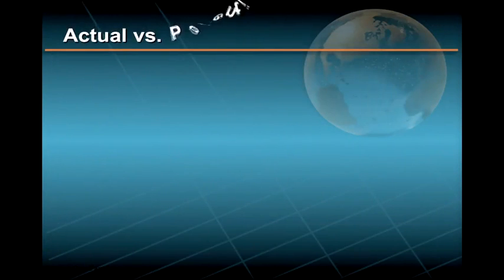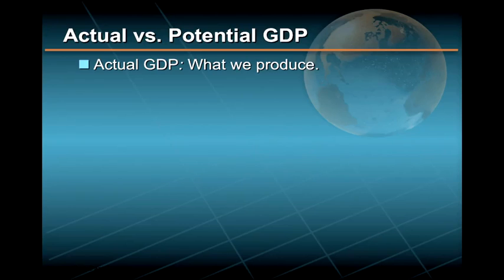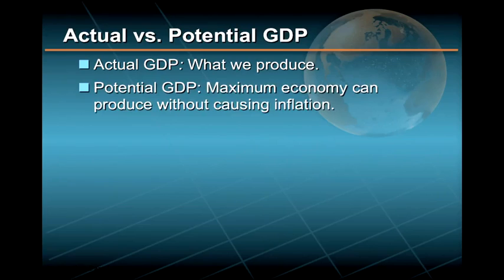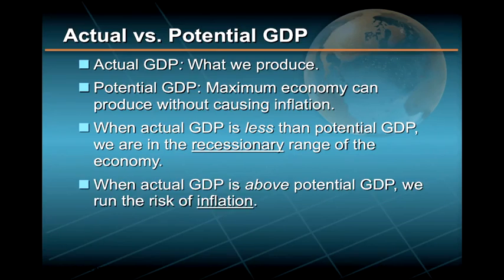In thinking about economic growth and GDP, it is useful to distinguish between actual and potential GDP. Actual GDP represents what we are currently producing, while potential GDP represents the maximum amount the economy can produce without causing inflation. When actual GDP is well below potential GDP, we are in the recessionary range. When actual GDP is above potential GDP, we run a strong risk of inflation.